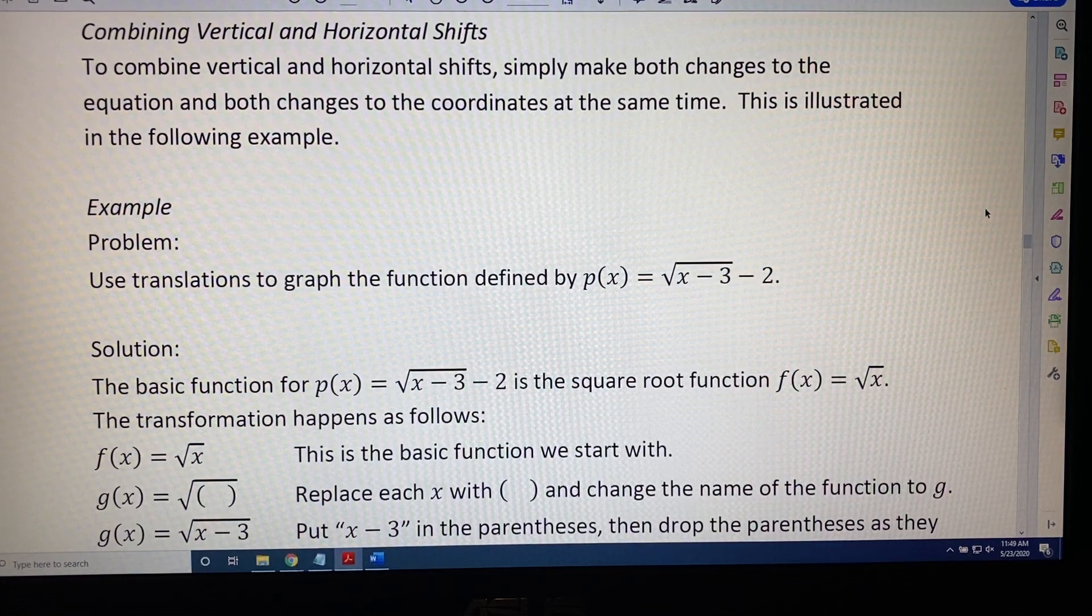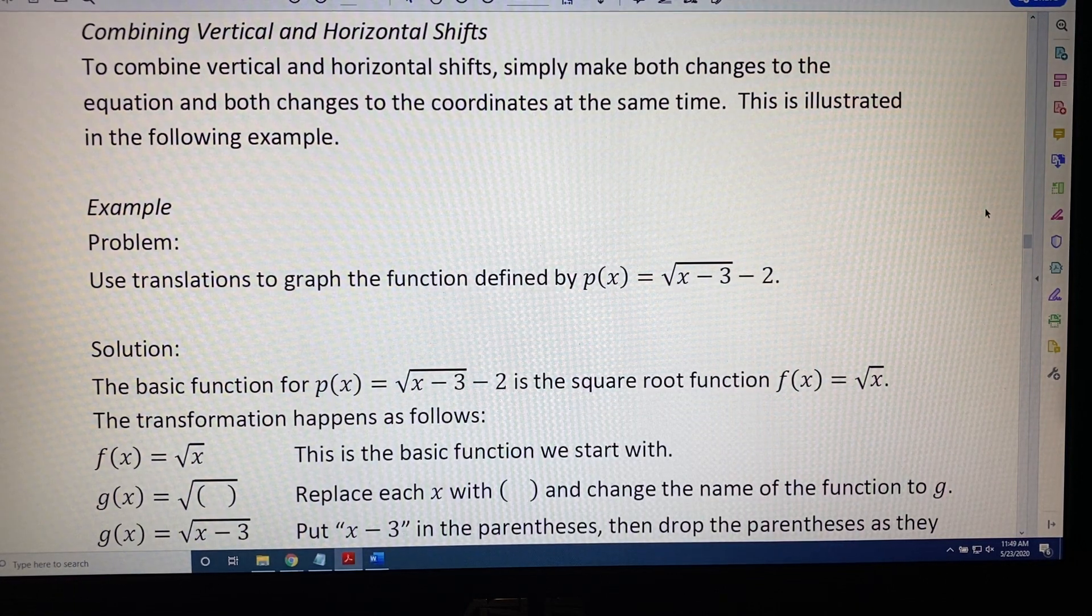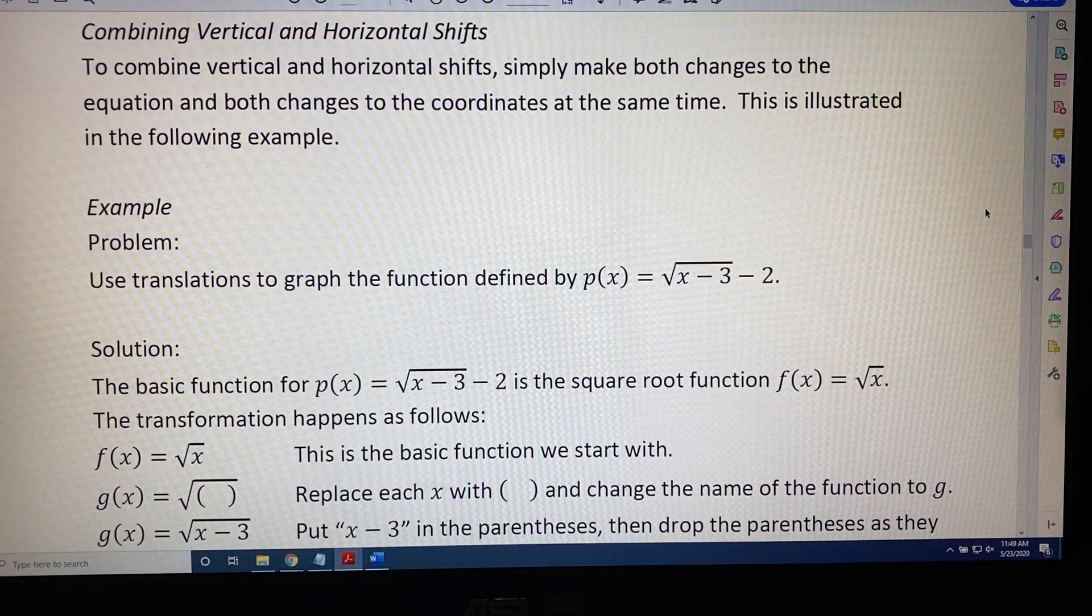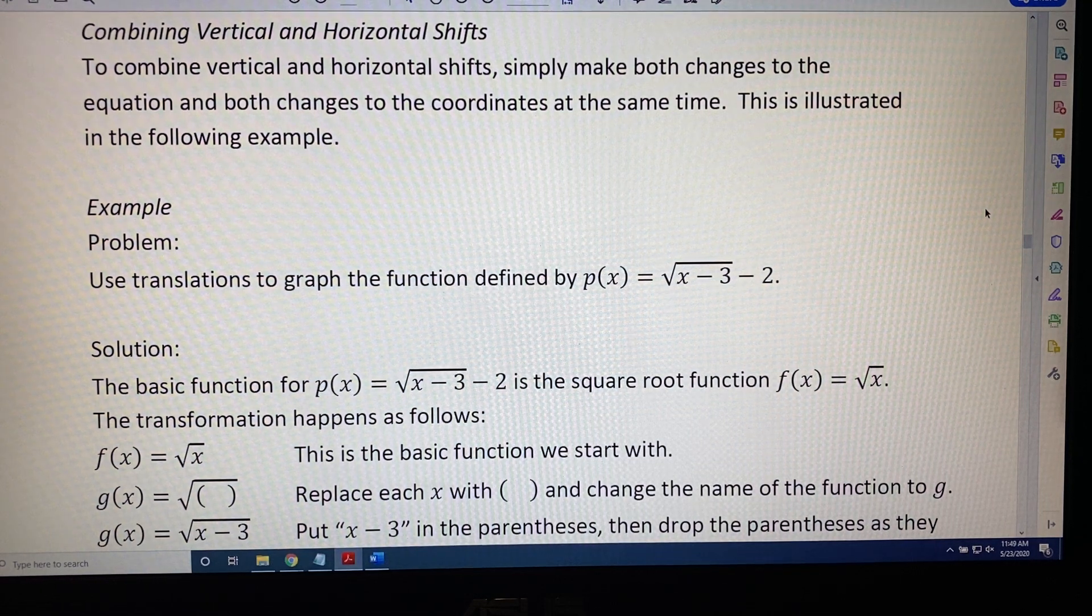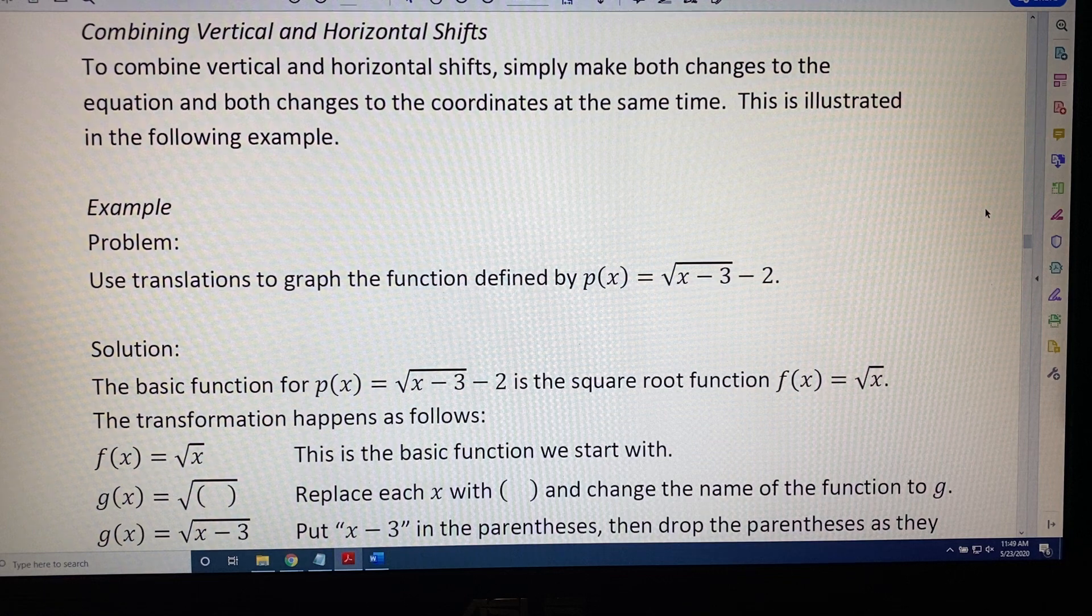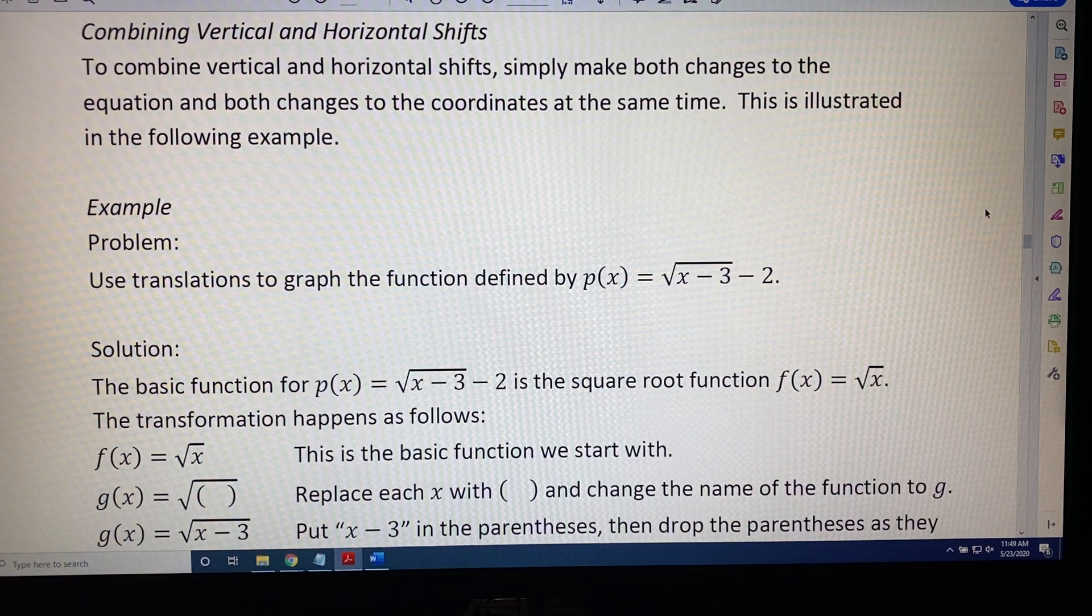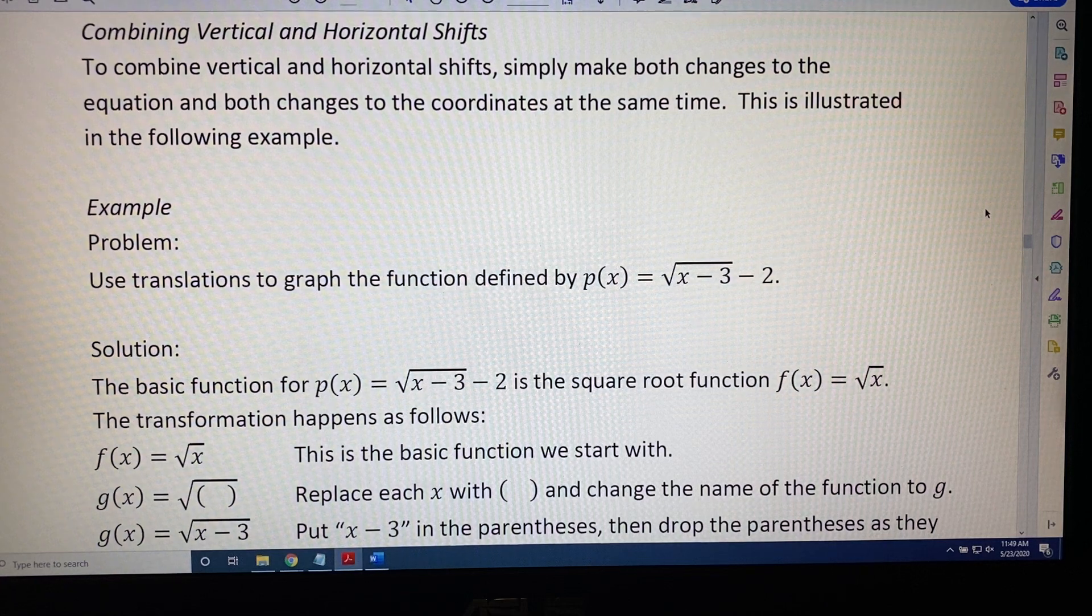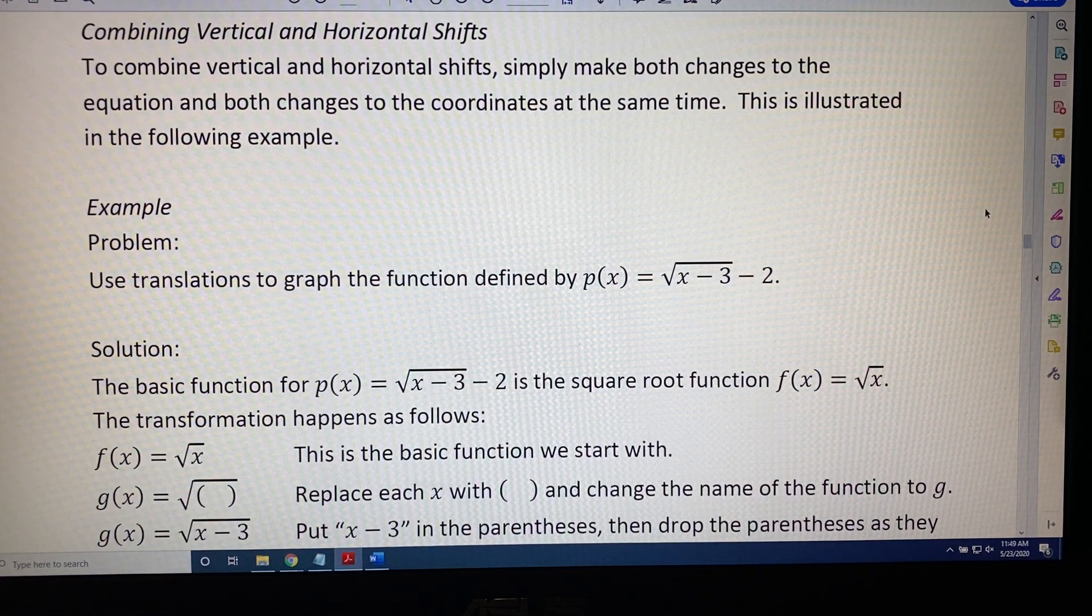The topic of this video is graphing transformation techniques combining vertical and horizontal shifts. To combine vertical and horizontal shifts, simply make both changes to the equation and both changes to the coordinates at the same time. This is illustrated in the following example.